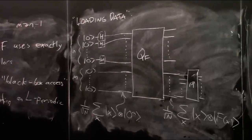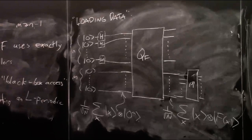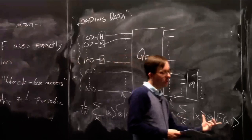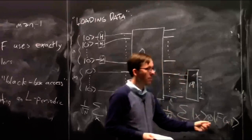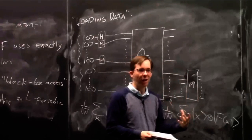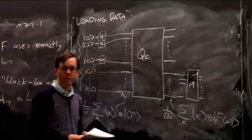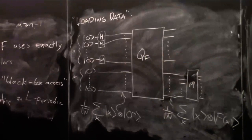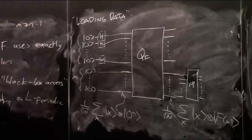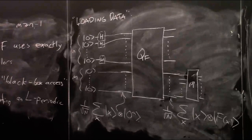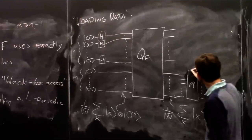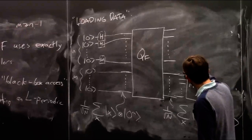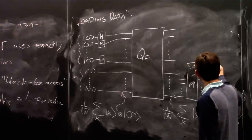We have to recall the rules for partial measurement. We have an n plus m qubit state and we measure all the m bits. The probability of seeing a particular outcome C* — say, red — is found by looking through all pieces of the state where the second half is red and summing the squares of the amplitudes. By L-periodicity, there are always exactly two pieces of the state with any given color, each with amplitude 1 over root N, so the probability is 2 over N.